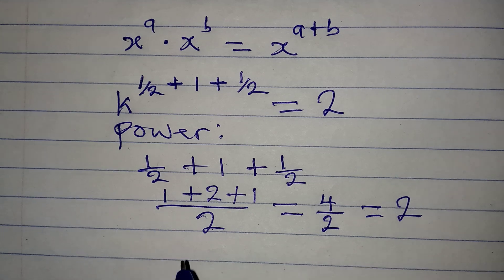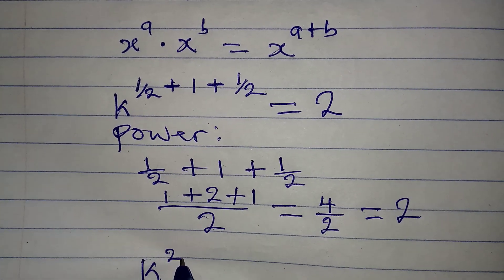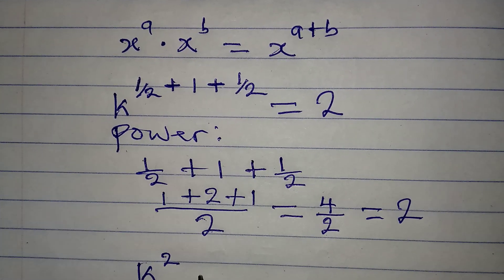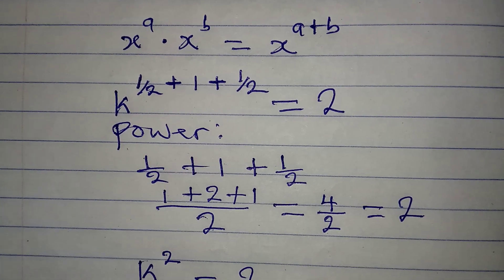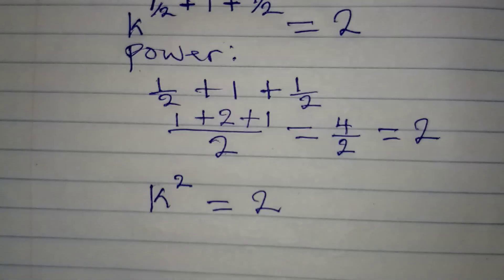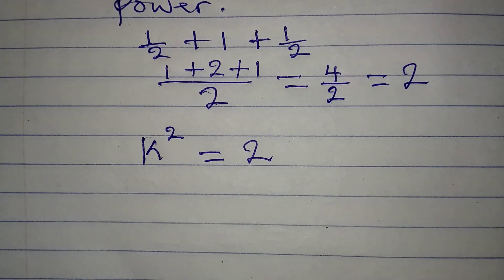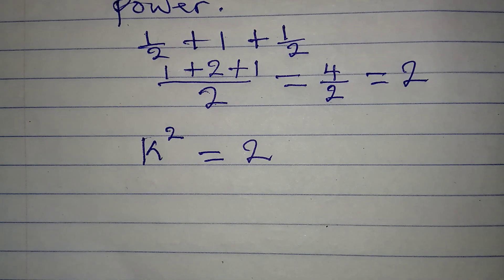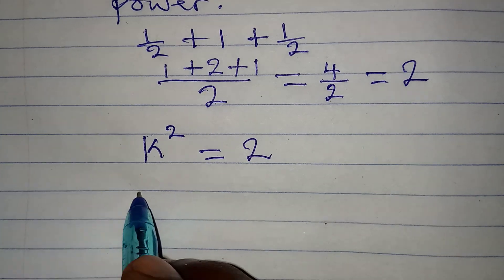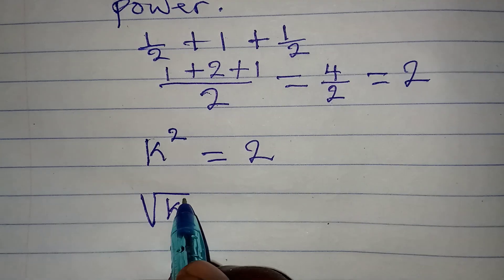This means we have k to the power of 2 equal to 2. The next thing to be done is taking the square root of both sides, so we have square root of k squared...